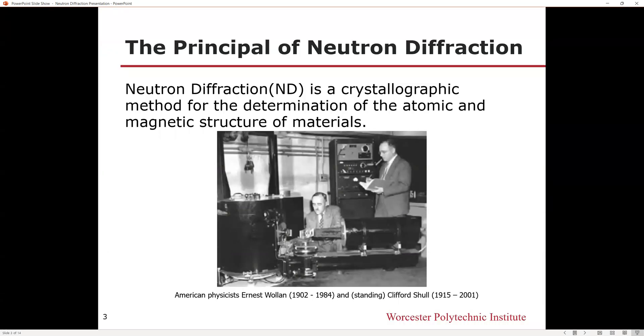Neutron diffraction is a crystallographic method for the determination of the atomic and magnetic structure of materials. The first neutron diffraction experiment was in 1945 by Ernest using the graphite recorder at Oak Ridge National Laboratory. They together outlined the principle of neutron diffraction technique.